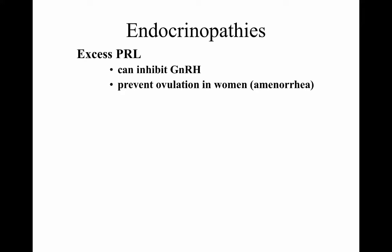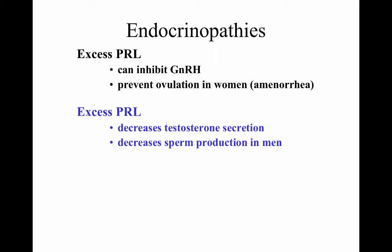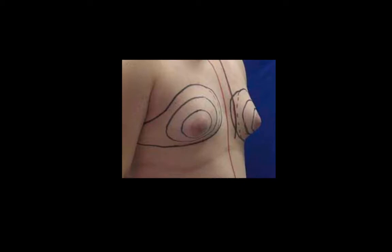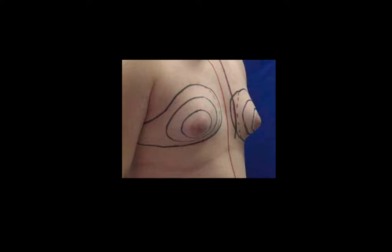Endocrinopathies of excess prolactin can inhibit gonadotropin-releasing hormone and prevent ovulation in women, also known as amenorrhea. Galactorrhea — excess prolactin — can decrease testosterone secretion and decrease sperm production in men. Galactorrhea is a problem with excess lactation affecting about 5% to 32% of women. Gynecomastia is an imbalance of estrogen and testosterone that can produce enlargement of breasts in males, which may correct itself over time.